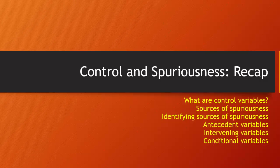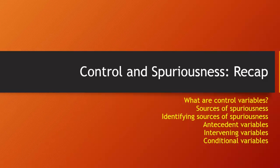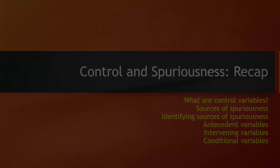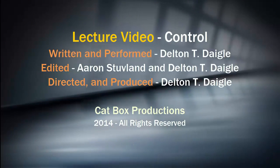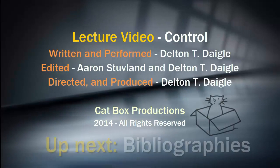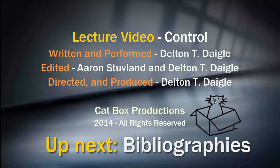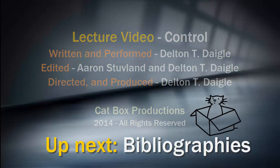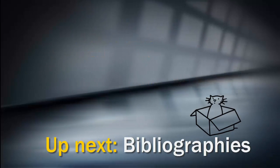Very good. So we've covered a lot of ground here. We've looked at what control variables are. We've looked at potential sources of spuriousness, identified sources of spuriousness, looked at antecedent, intervening, and conditional variables. Fantastic, students. You're doing outstanding. The next thing we're going to cover is bibliographies, annotated bibliographies, and how we research our research questions. We'll see you soon.